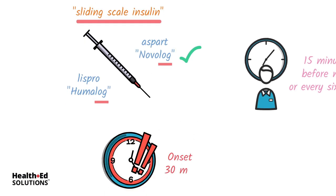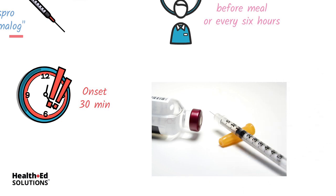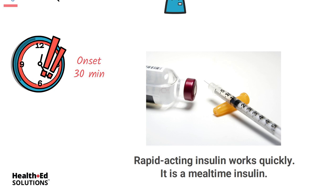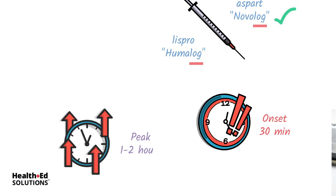The onset for all rapid acting insulins is within 30 minutes — no later than 30 minutes, these insulins start working and kicking in. That's why we can't check a patient's blood sugar at 10:30 and give their insulin when the lunch trays won't arrive until 12:30, because the insulin will be peaking out, working at its most powerful rate within two hours. The onset of your rapid acting — Lispro, Novolog — is within 30 minutes, and it is peaking within about two hours.